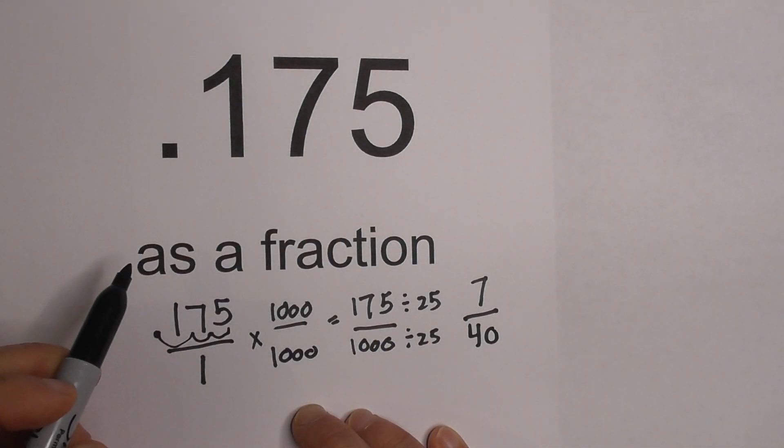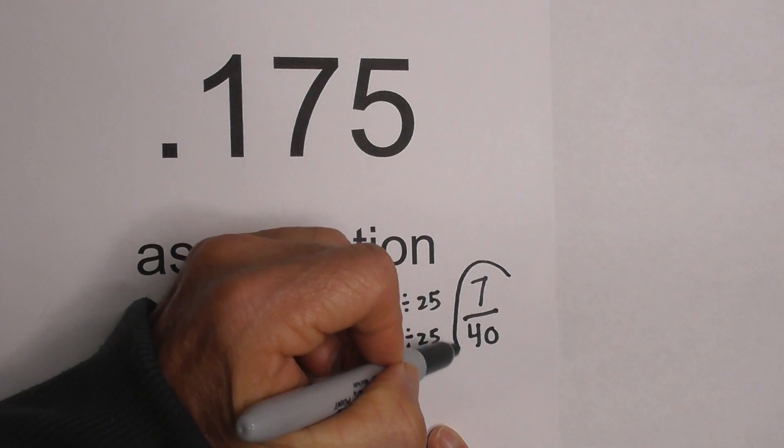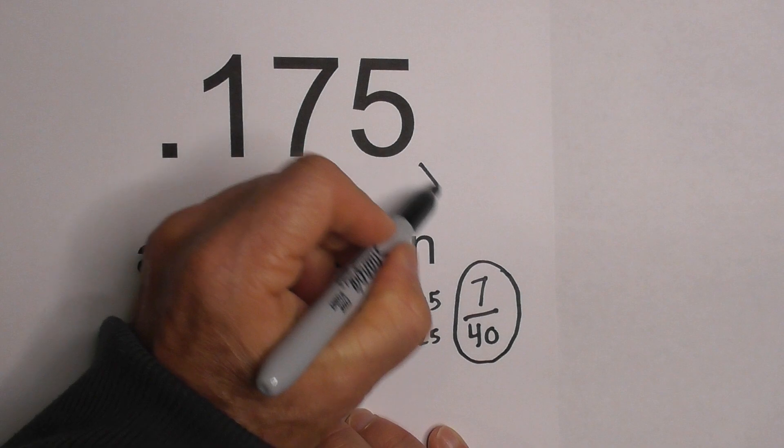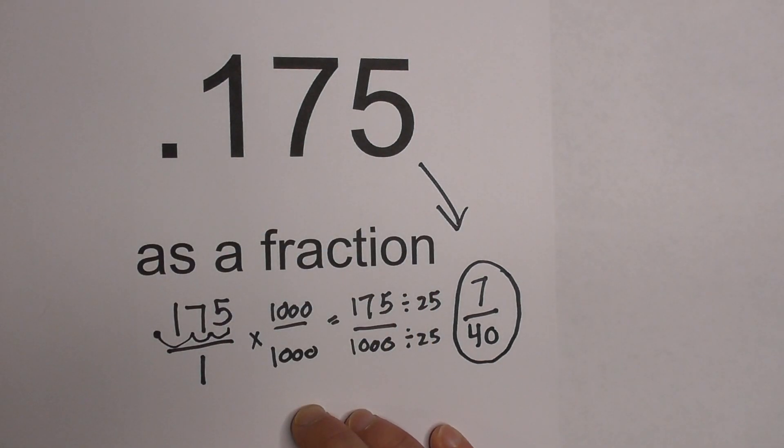7 is a prime number, so I know here is the fraction. So 175 thousandths as a fraction equals 7 fortieths.